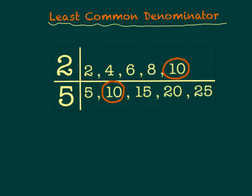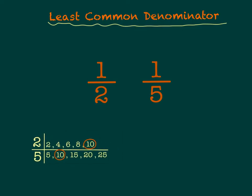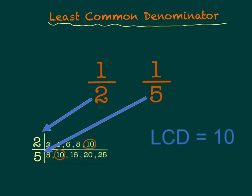I'm going to use that same process to find the least common denominator. The only difference is I'm now talking about denominators. So if I were looking at the fractions 1 half and 1 fifth and I wanted to find the least common denominator — say, to add or subtract the fractions — then I would follow the same process, but I would only pull out or extract the 2 and the 5. Once I've listed the multiples and found the least one they have in common, I have just identified the least common denominator as well.